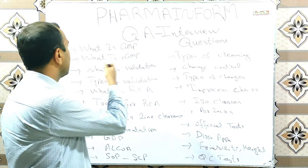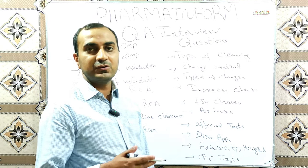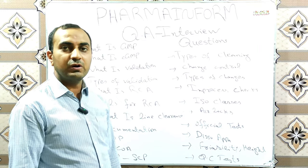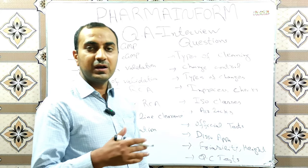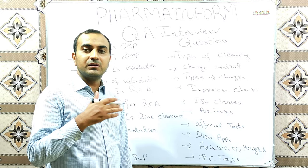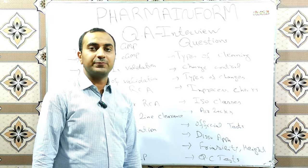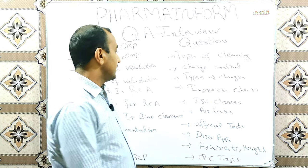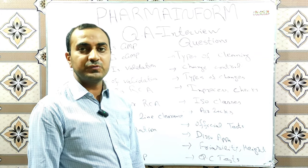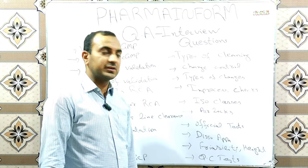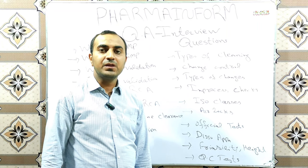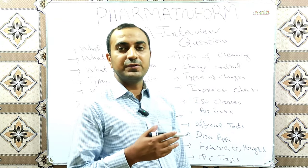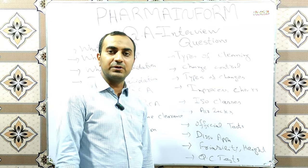In this video we will discuss: what is GMP, what is cGMP, what is validation, types of validation, what is RCA, tools used for RCA, what is line clearance, what is checked during line clearance, what is documentation, what is ALCOA, what is SOP, SCPs, classification of ISO system, which clean room is used for tablet manufacturing, capsule manufacturing, types of cleaning, what is change control, types of changes, in-process checks for various dosage forms, dissolution apparatus, friability, and much more.